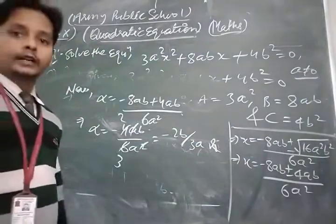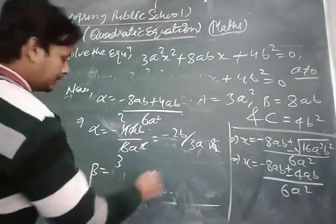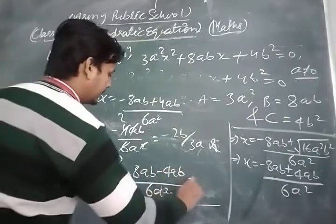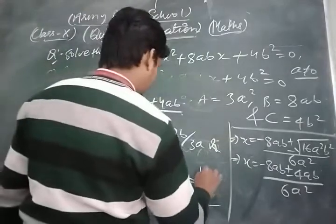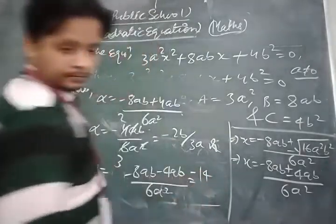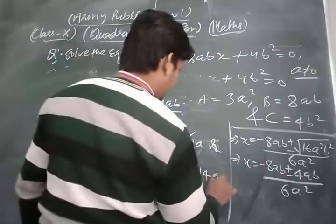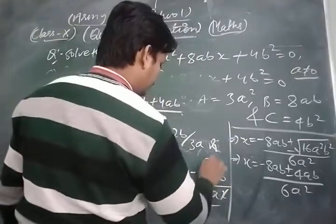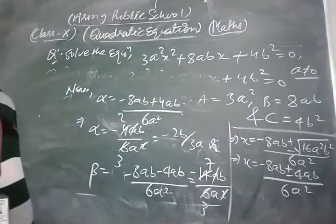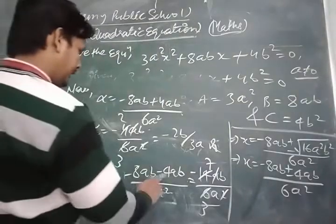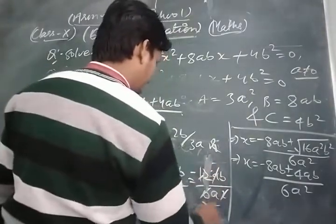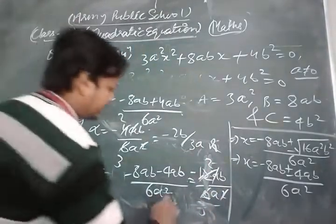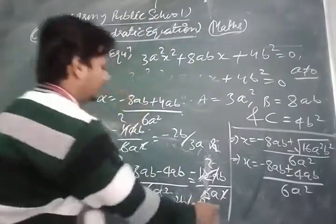First root: alpha = -2b / 3a. Taking the minus sign for the second root beta: β = (-8ab - 4ab) / 6a² = -12ab / 6a² = -2b / a. So the two roots are -2b/3a and -2b/a. In this way you can solve all such questions.